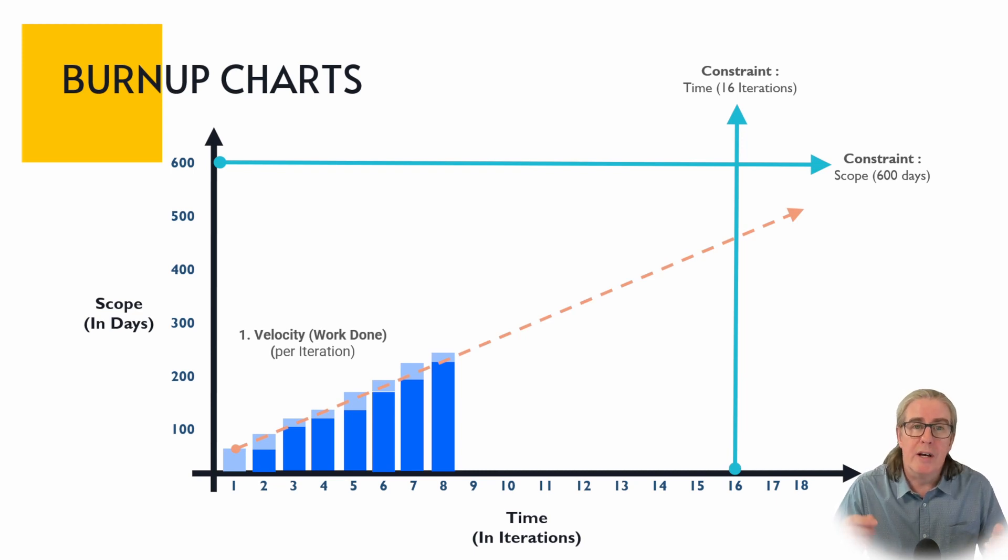Once you've worked out and tracked the amount of work done that you've managed to get done every iteration then you can make a projection. And the projection is based on what's called your velocity, how much work you're getting done in each period of time within each iteration. And by doing that you're able to then make a projection to see where this is going, if you keep going at this sort of rate, how far are you going to get?